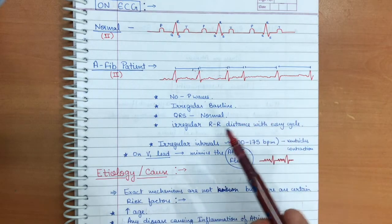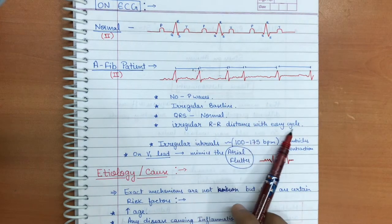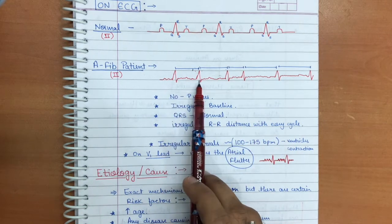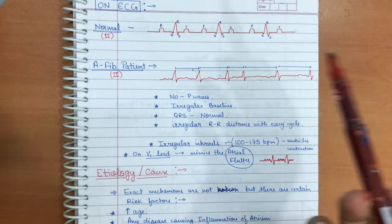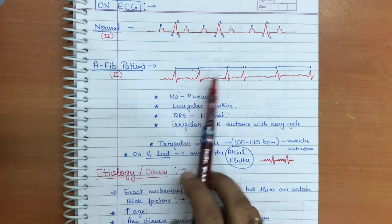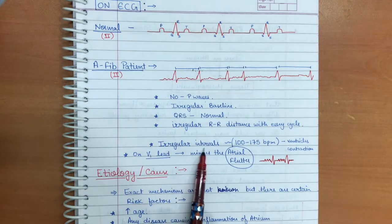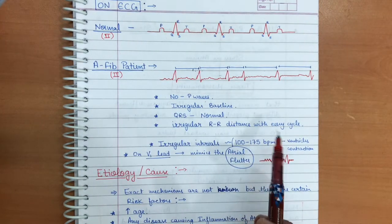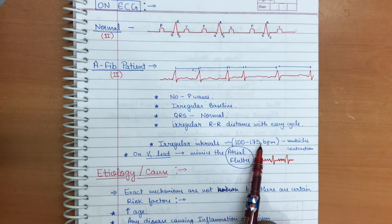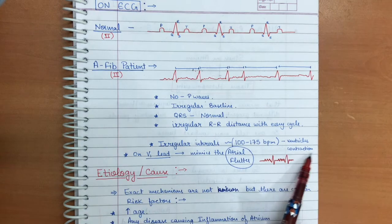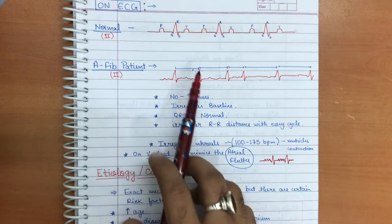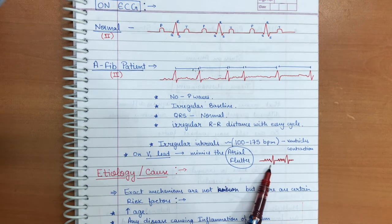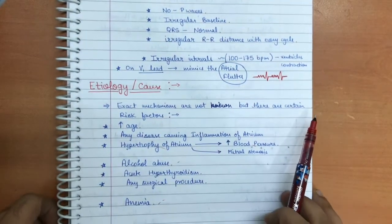The QRS is normal because the AV node's refractory period still sends impulses to the ventricles, allowing them to depolarize normally. However, there is an irregular RR interval — sometimes impulses are sent early, sometimes late — resulting in fluctuating beats per minute of 100 to 175, leading to rapid ventricular contraction. On the precordial V1 chest lead, an AFib ECG can mimic atrial flutter.